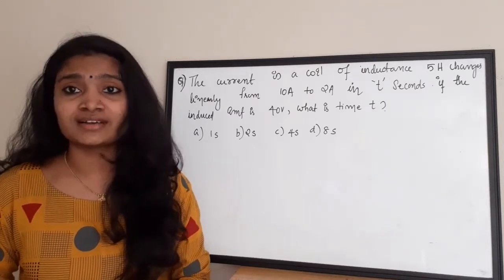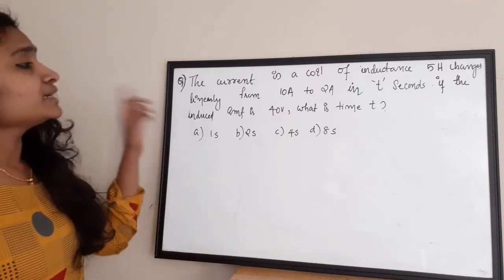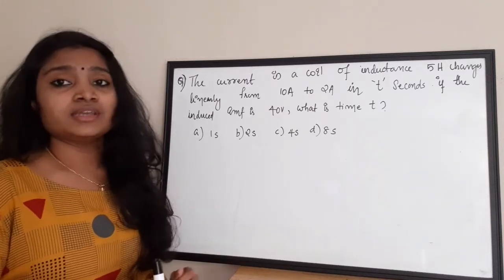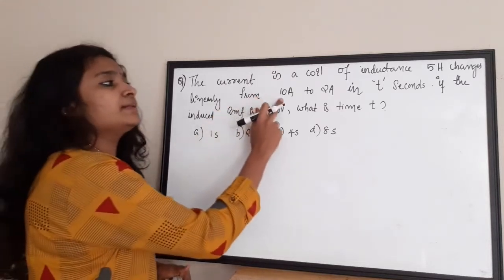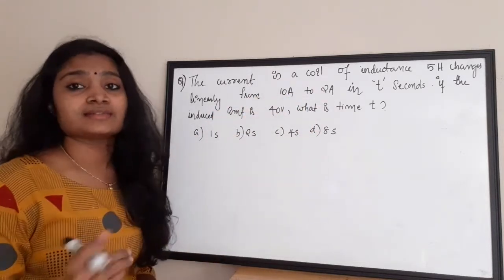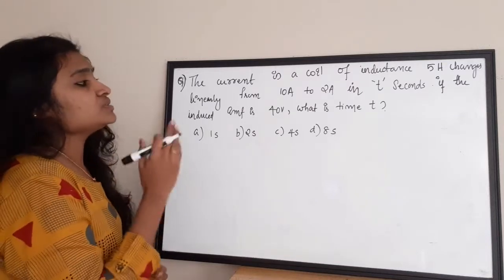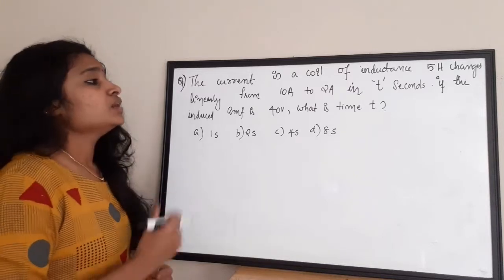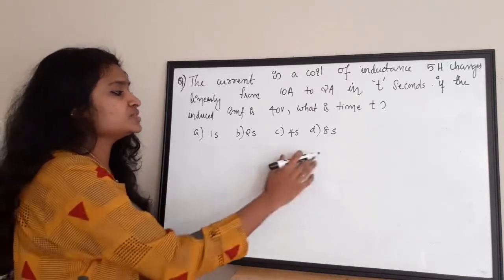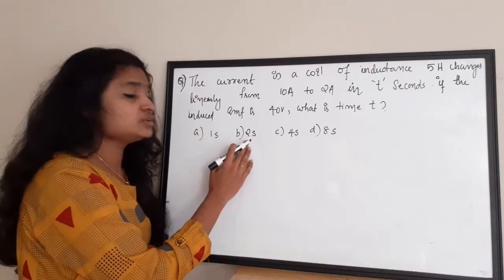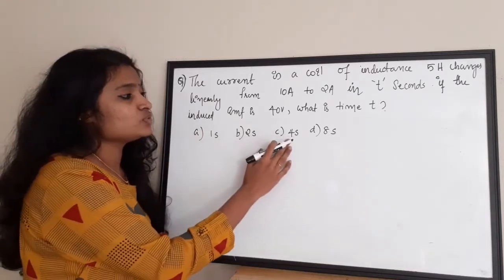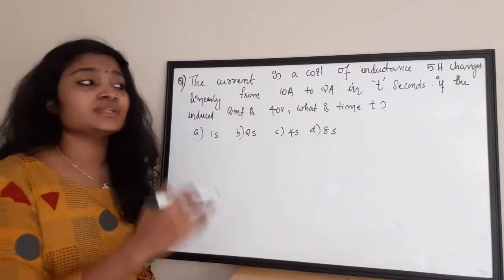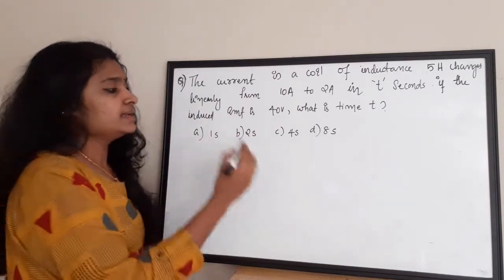Let us see the first question for today's class. The current in a coil of inductance 5 henry changes linearly from 10 ampere to 2 ampere in T seconds. If the induced EMF is 40 volt, what is that time T? The options given are: option A 1 second, option B 2 seconds, option C 4 seconds, and option D 8 seconds.